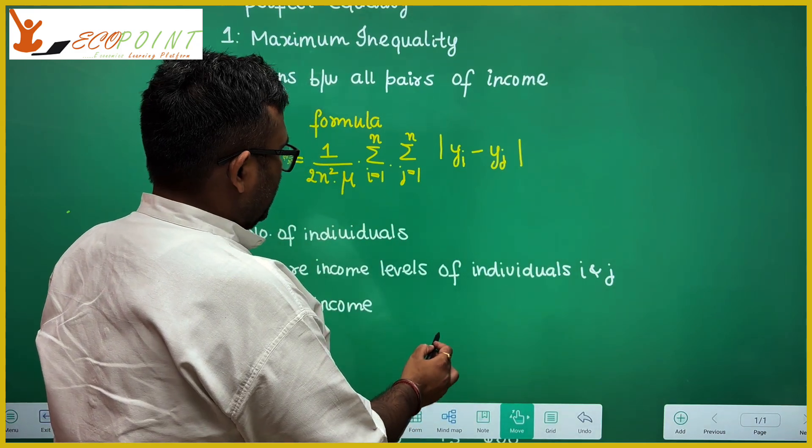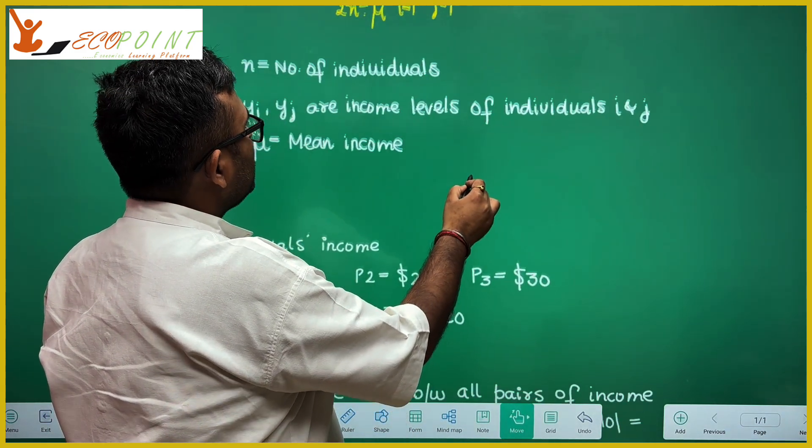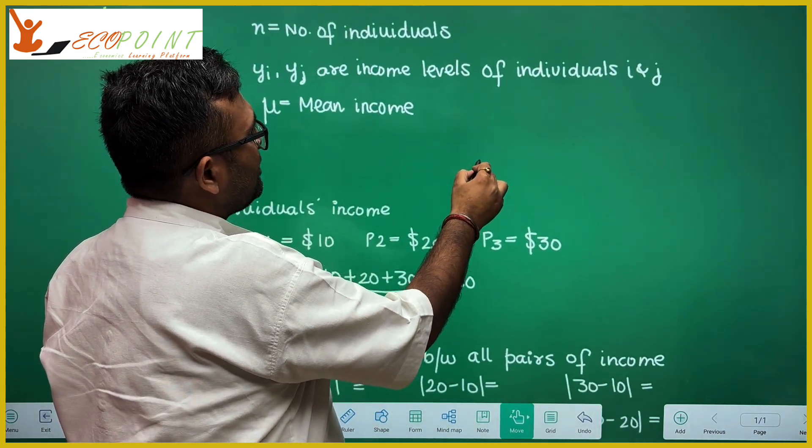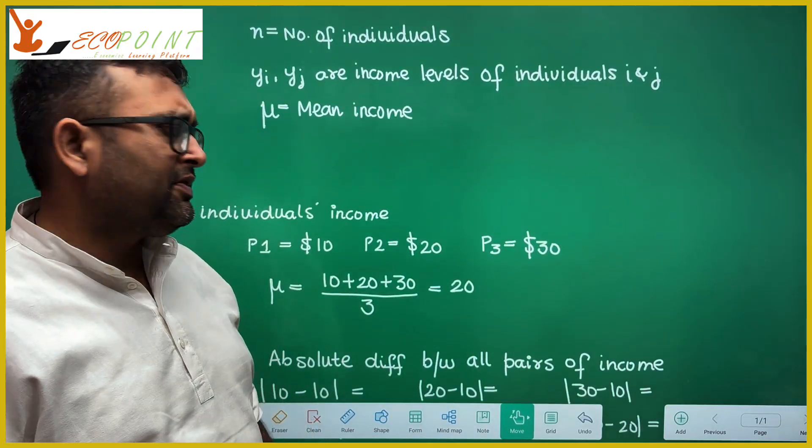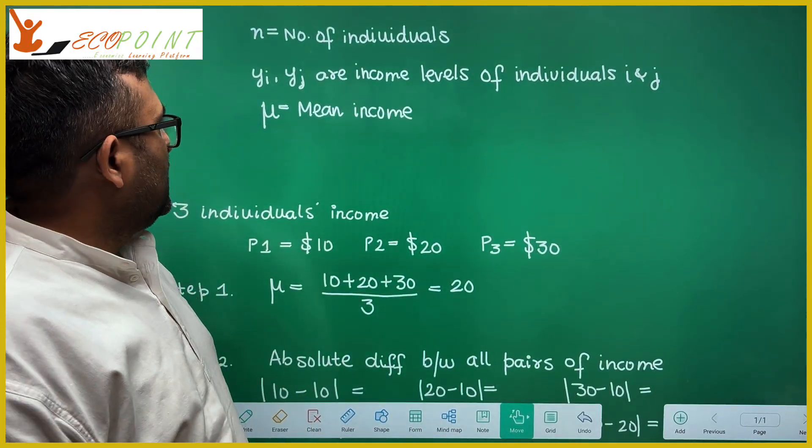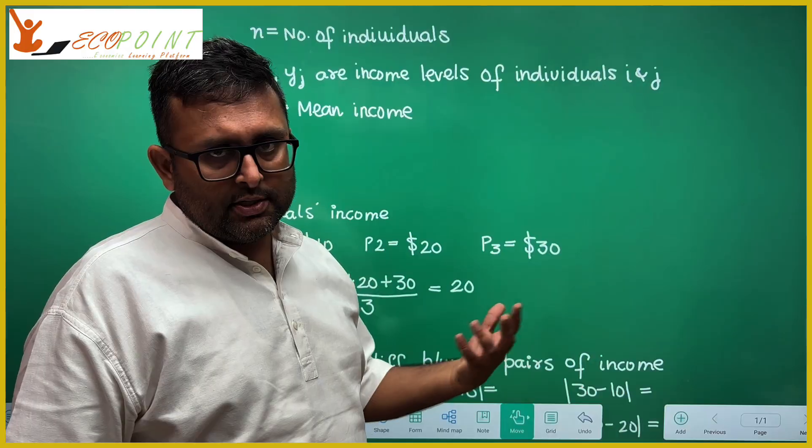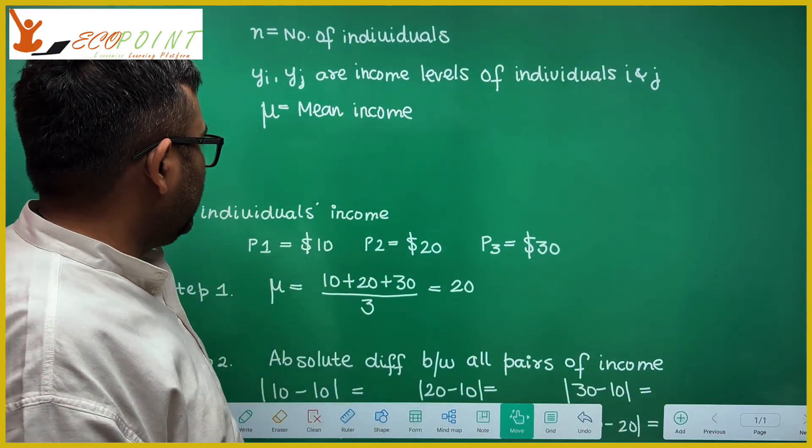Now take up a very simple example. Let us say you have N as the number of individuals. Let's say we have three individuals. Yi and Yj are the income levels of individuals I and J. Mu is the mean income.